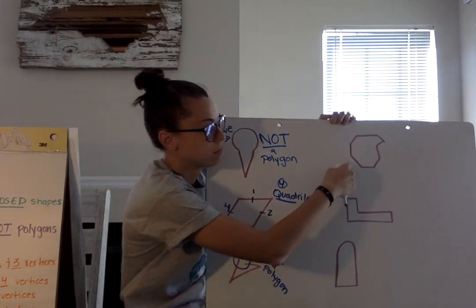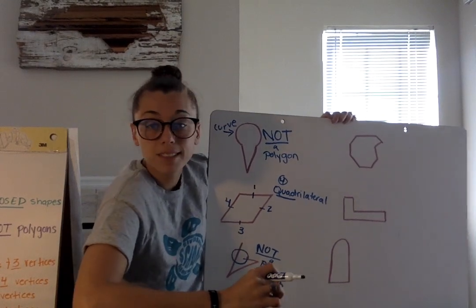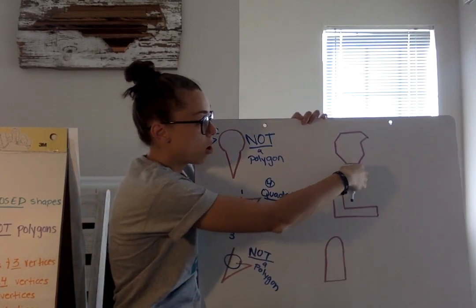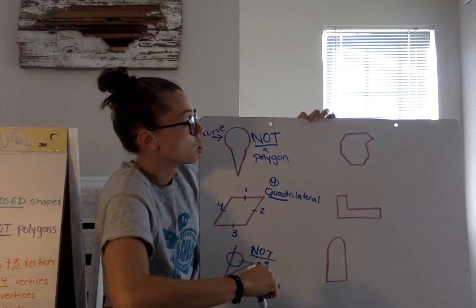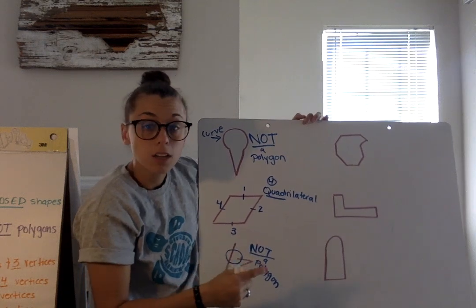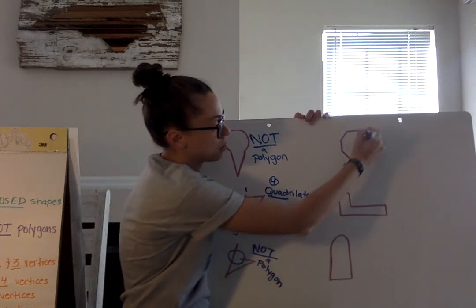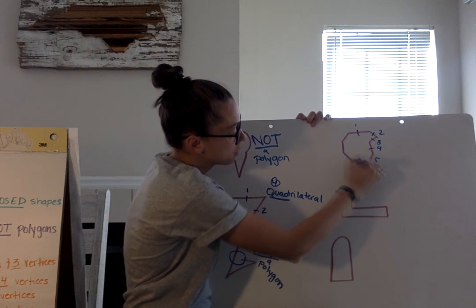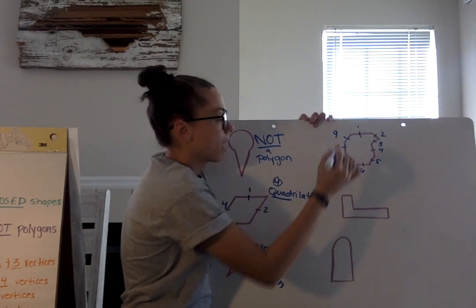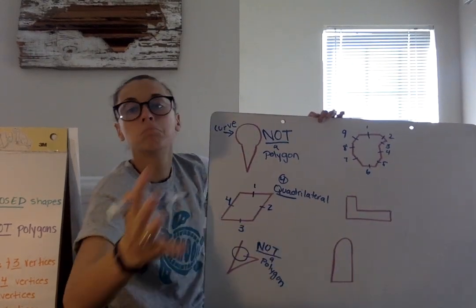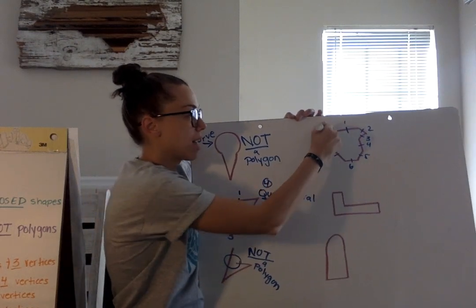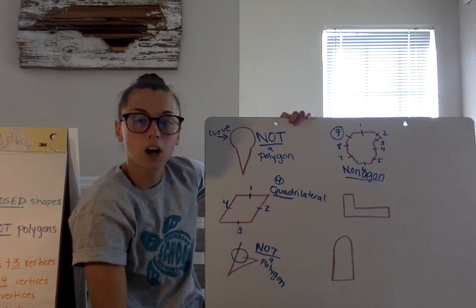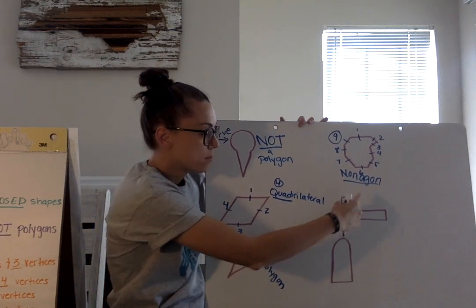We don't have to go any further because we can't give it a name if it's not a polygon. Now this weird-looking shape — just because you haven't seen it doesn't make it not a polygon. Is it a closed shape? Absolutely — all sides are touching. Are there any curved edges? Nope, all lines are straight. It is a polygon. Counting all the sides: one, two, three, four, five, six, seven, eight, nine. When it has nine sides, that is called a nonagon.